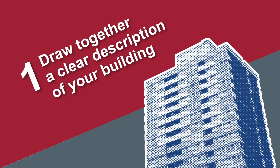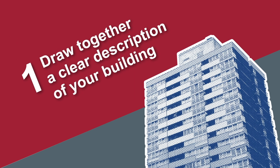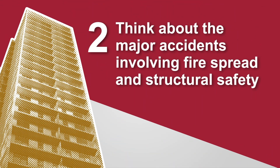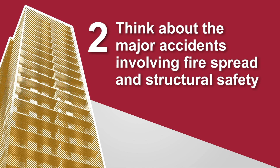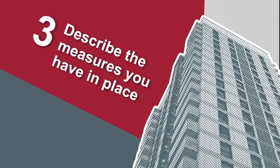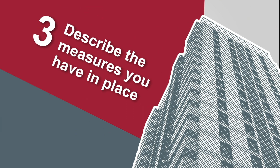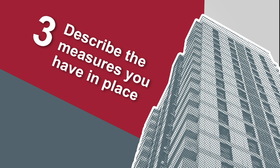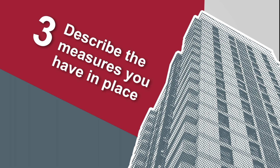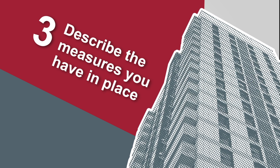How to start your report: Draw together a clear description of your building. Think about the major accidents involving fire spread and structural safety that could affect your building. Describe the steps you've taken to prevent major fire and structural accidents and minimise their impact, and how measures such as emergency evacuation and firefighting arrangements will affect people.